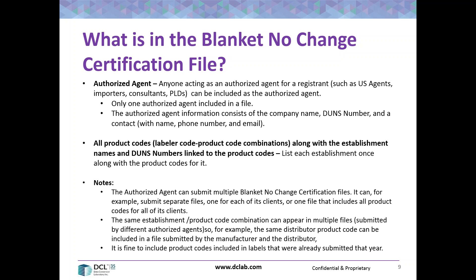And it is fine to include product codes from labels that were already submitted that year. The way I view this: you can set up a no change certification file with all of your product codes. If you come to October 1st and you're not sure which labels you haven't updated yet, you just submit this blanket no change certification file with all of your product codes. The FDA does not mind the double counting — submitting during the year and certifying at the end of the year is fine.